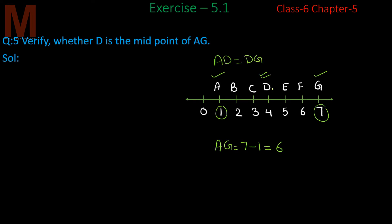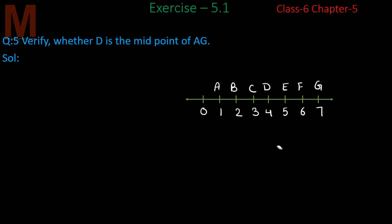If D is the midpoint, then we need to show the condition AD = DG. If we can show this, it will be proved that D is the midpoint of AG. So let's find the length of AD: 4 minus 1 = 3 units.